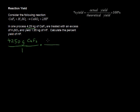For every one mole of CaF2, we have a molecular mass of Ca — calcium — which has a molar mass of 40.08, plus 2 times the molar mass of fluorine, which is 19, so 2 times that is 38. This gives us a molecular mass of 78.01 grams per mole for CaF2.